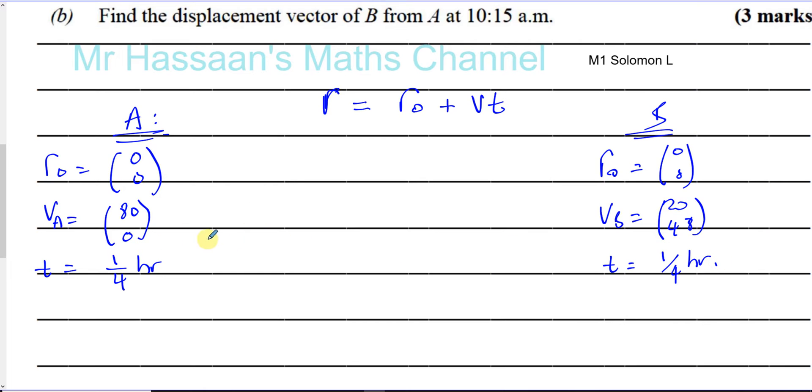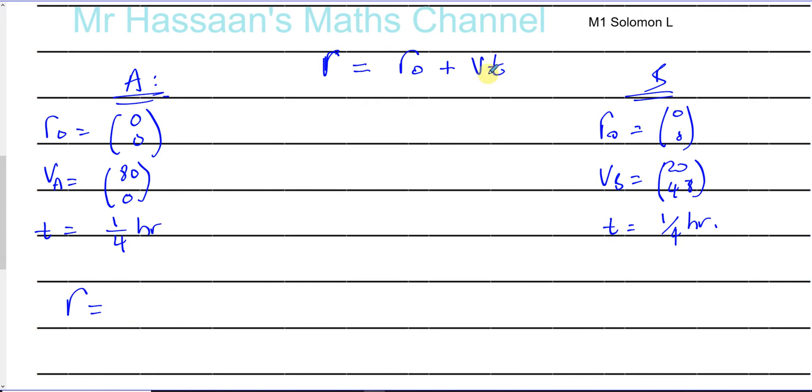So we can write down here that for A, its position vector after 15 minutes is going to be given by (0, 0) plus V times T. So it's going to be basically a quarter times (80, 0), which is a quarter of 80 is 20, that's (20, 0). That's a position vector of A after 15 minutes. And the position vector of B, we call it RB, after 15 minutes, is going to be a quarter times (20, 48), which is (5, 12).